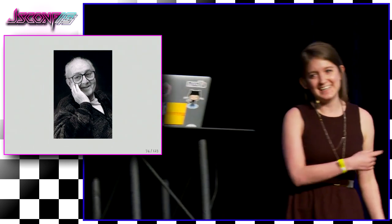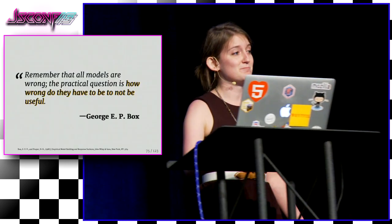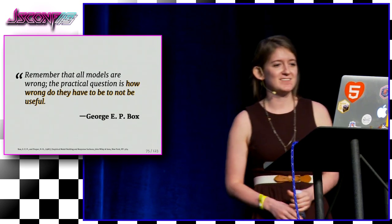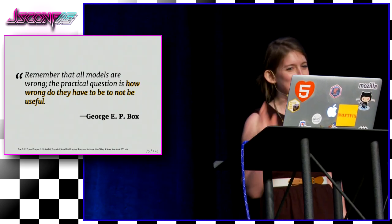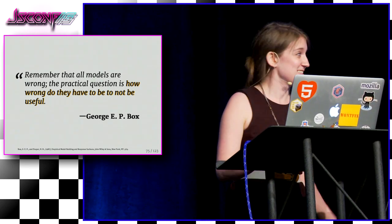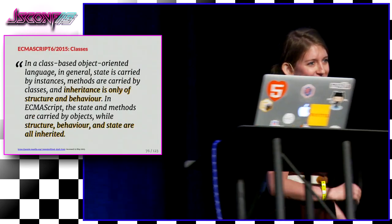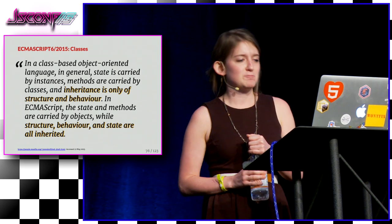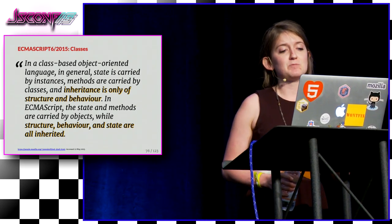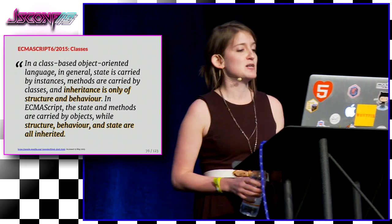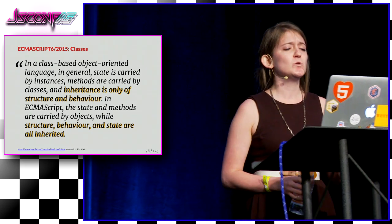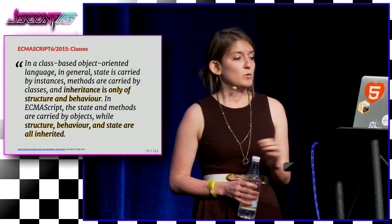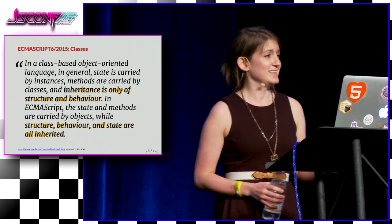This guy has this amazing quote: remember that all models are wrong. The practical question is, how wrong do they have to be to not be useful? From the spec: in a class-based object-oriented language, state is carried by instances, methods are carried by classes, and inheritance is only of structure and behavior. In ECMAScript, the state and methods are carried by objects, while structure, behavior, and state are all inherited.